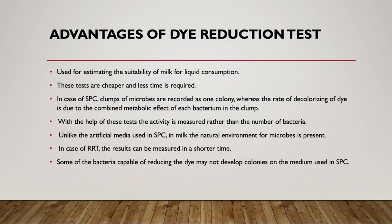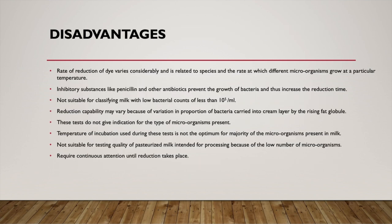Unlike the artificial media used in SPC, milk provides a natural environment for microbes. In the resazurin test, results are measured in a shorter duration of 10 minutes, and some bacteria capable of reducing dye may not develop colonies on plates. However, disadvantages include that the rate of dye reduction varies depending on the microorganisms present, temperature, and oxygen levels. If an inhibitory substance like an antibiotic is present, it will prevent bacterial growth and increase the reduction time. This method is also not suitable for classifying milk with low bacterial counts.